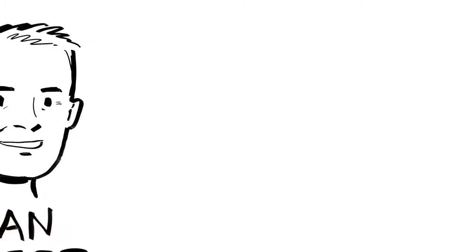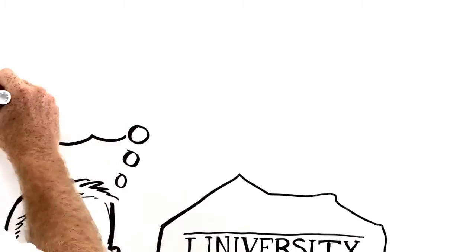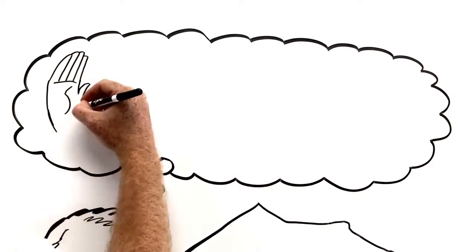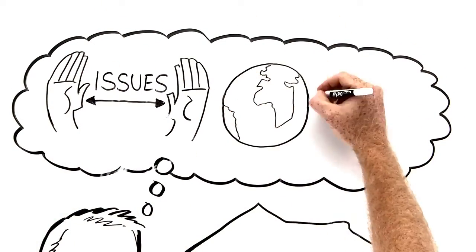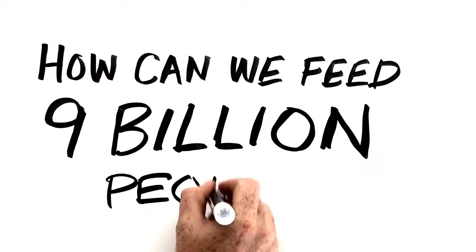Hello, my name is Evan Fraser, and I work at the University of Guelph in Ontario, Canada. Mostly what I do is try and understand one of the biggest issues facing our world over the next 50 years. How can we feed 9 billion people?